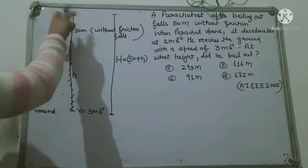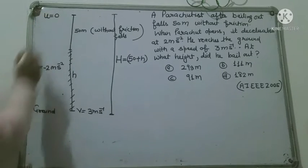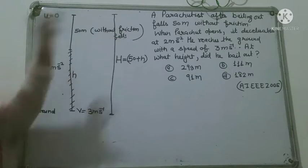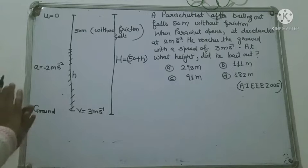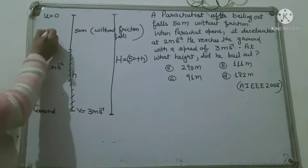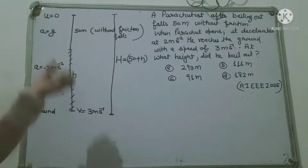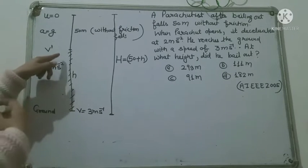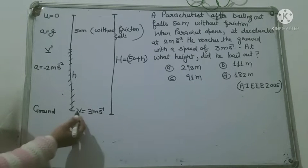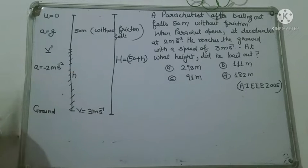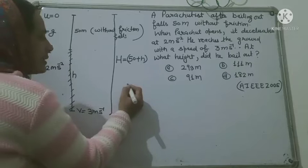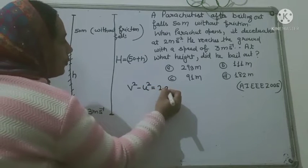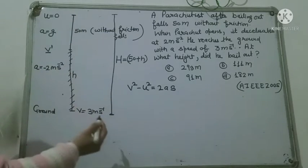देखो, यहाँ से जैसे ही उसने bail out किया था, उसकी starting velocity 0 थी. फिर वो 50 meter without friction नीचे आया — कोई air resistance include नहीं कर रहे, क्योंकि without friction कहा है, यानि due to gravity ही acceleration है. यहाँ पे जा करके parachute open होता है. तो यहाँ से अगर हमें यह V-dash पता चल जाए, और final V हमें पता है, तो हम distance का formula लगाकर height find कर सकते हैं. हमारे पास formula है: v² - u² = 2as.